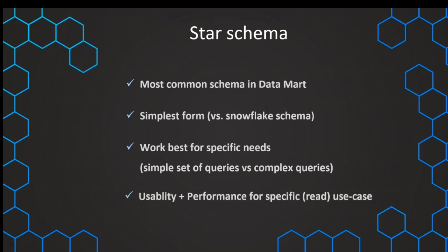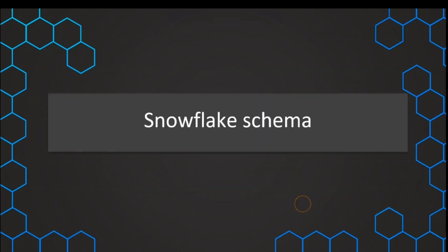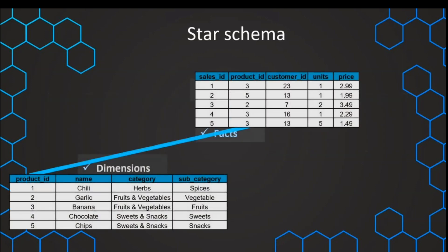Now we've already mentioned the snowflake schema, which is another variation — that's what we want to talk about next. Theoretically speaking, the star schema is a special case of a snowflake schema. A snowflake schema is the more general concept because it allows for multiple levels. So a star schema is a snowflake schema with only one level in the hierarchy. But even though this is theoretically true, a star schema is much more common in practice.